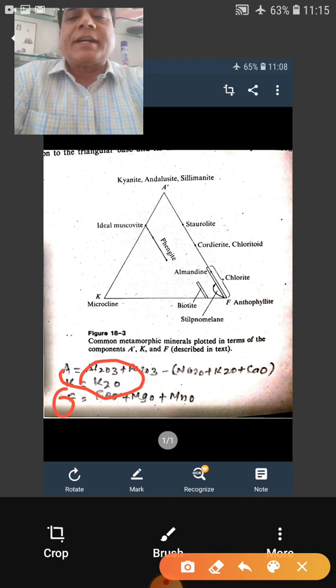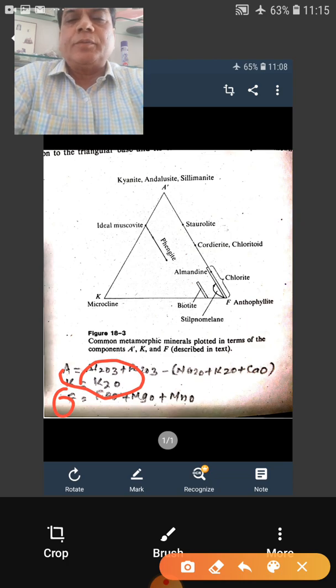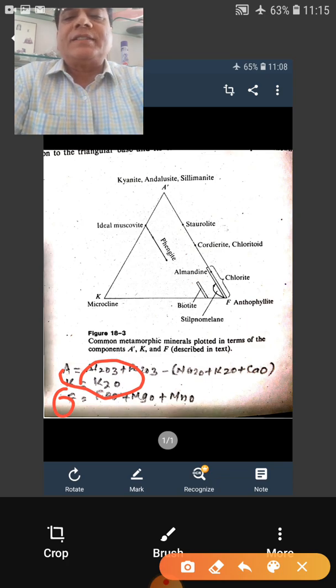So 0.3 you will subtract from composition of CaO. So whatever the amount of sphene is given, say again it is given one percent, so 0.3 you will subtract from CaO.